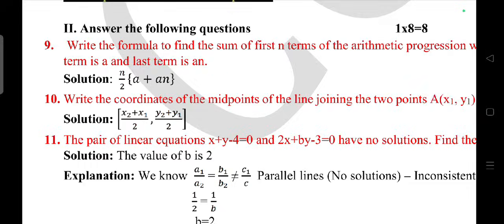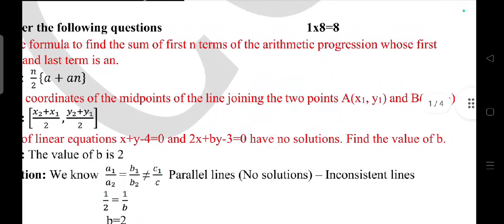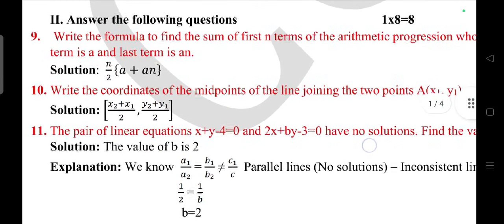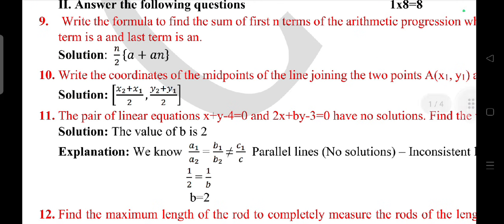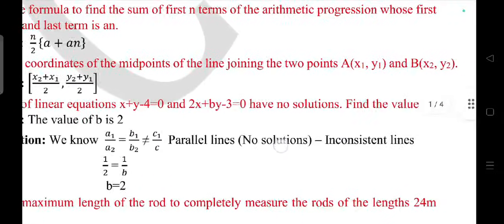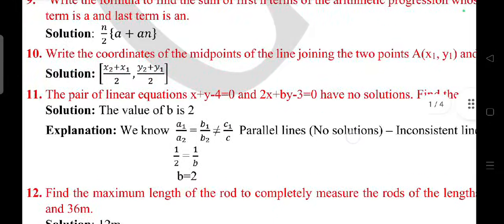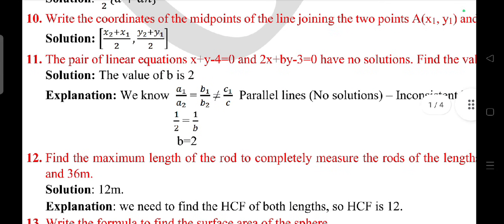Write the formula to find the sum of first n terms of arithmetic progression whose first term is a and last term is an: n by 2 into a plus an. Write the coordinates of midpoint of a line joining two points A and B: answer is x2 plus x1 by 2, y2 plus y1 by 2, midpoint formula.